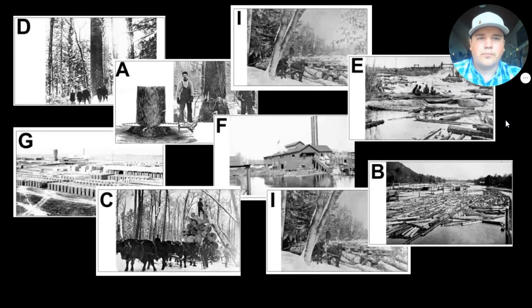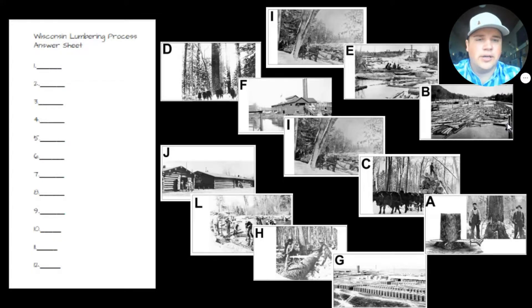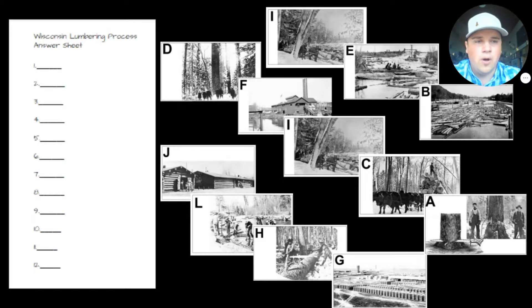Teachers, if you haven't set this up already, you can do this with just cards that they place on their desk in their correct order. Or if you want to get them to get up and move, you can print off the big pictures and have them run around and try to get the correct order that way. What I have for you are 12 different pictures in the lumbering process. There are 12 total pictures, and we need to organize them in the correct order, from step number one all the way down to step number 12.